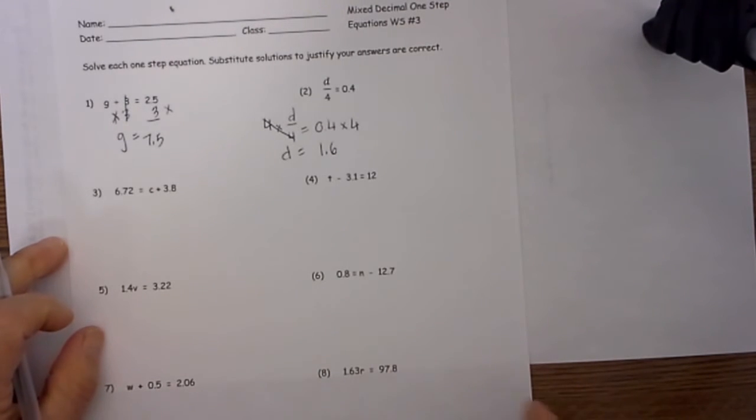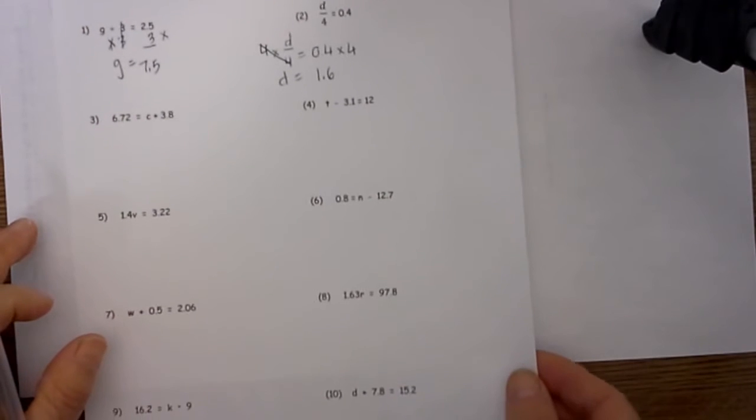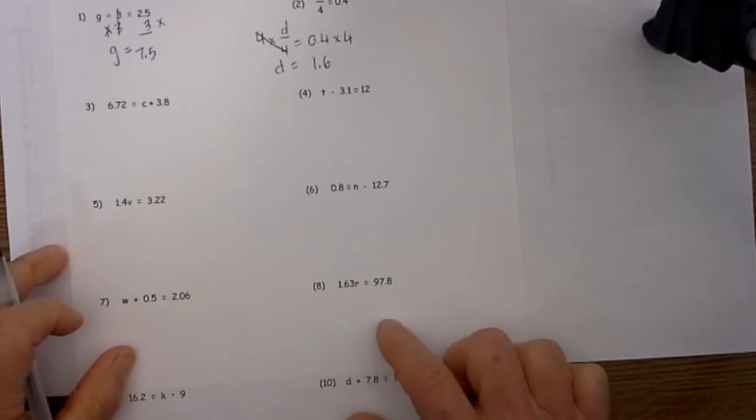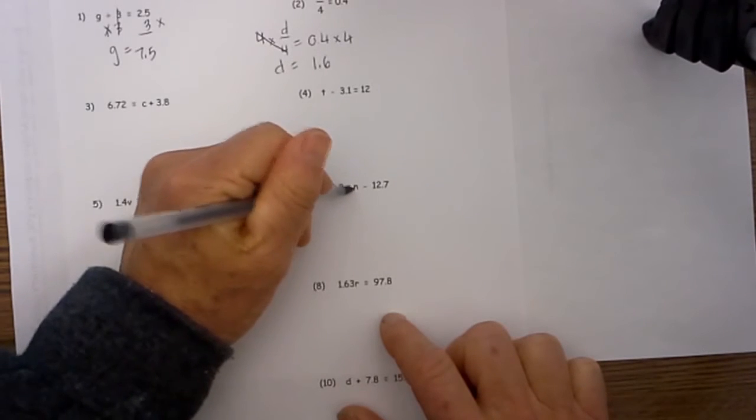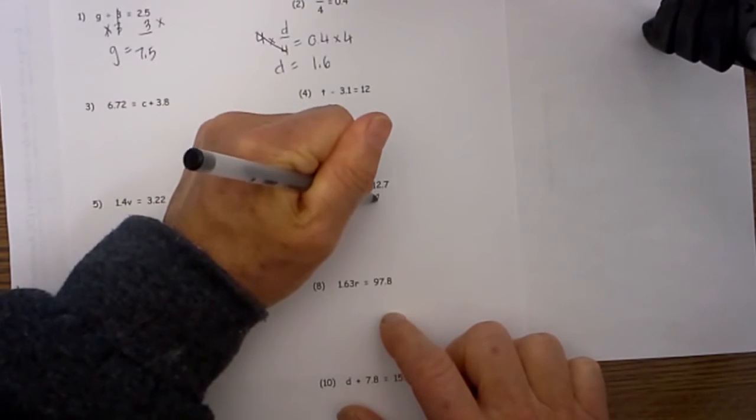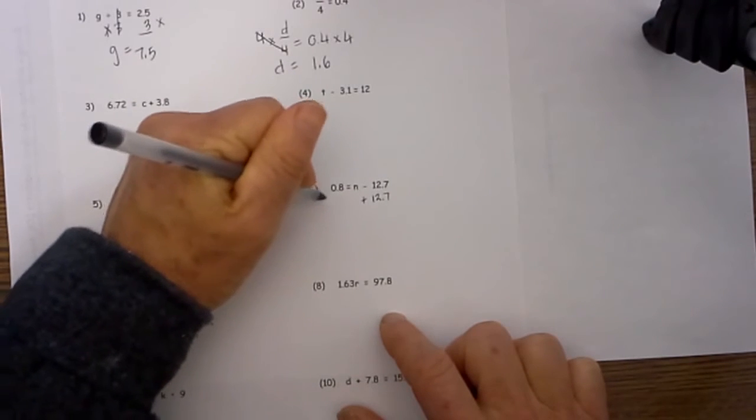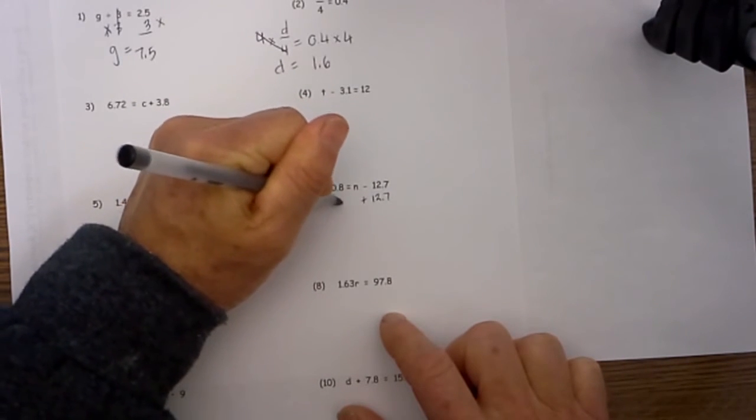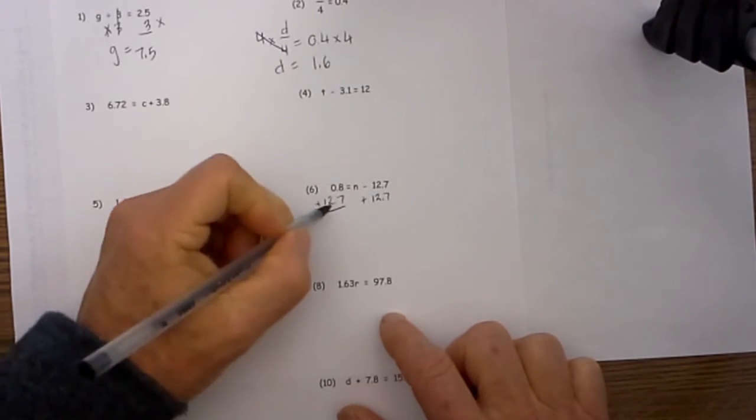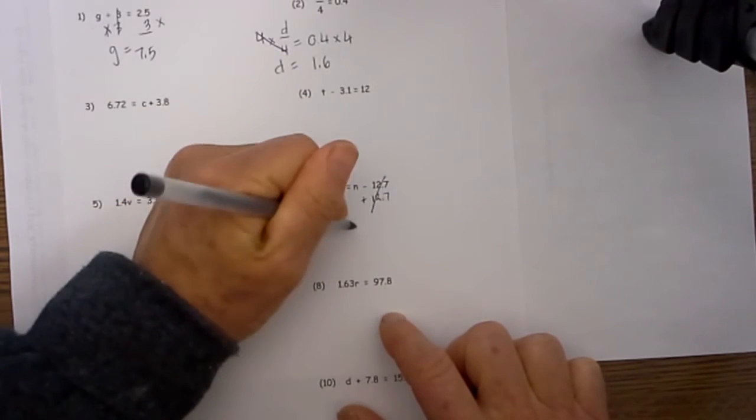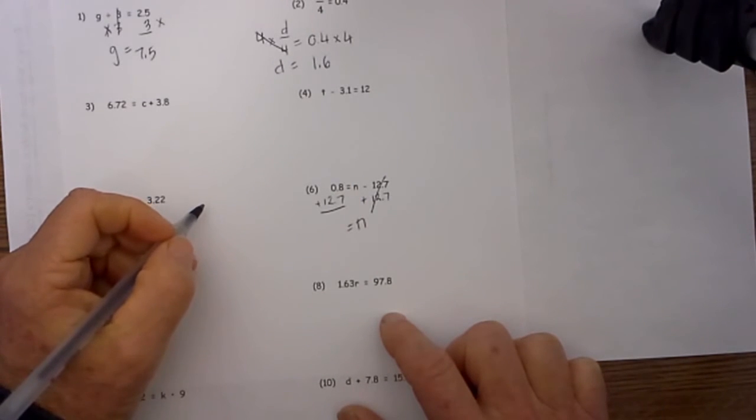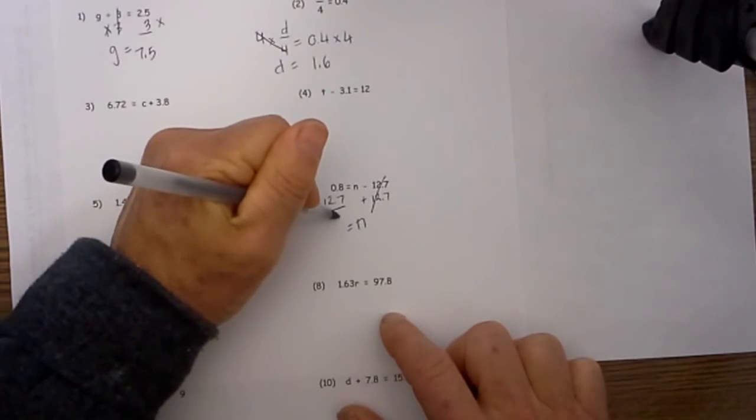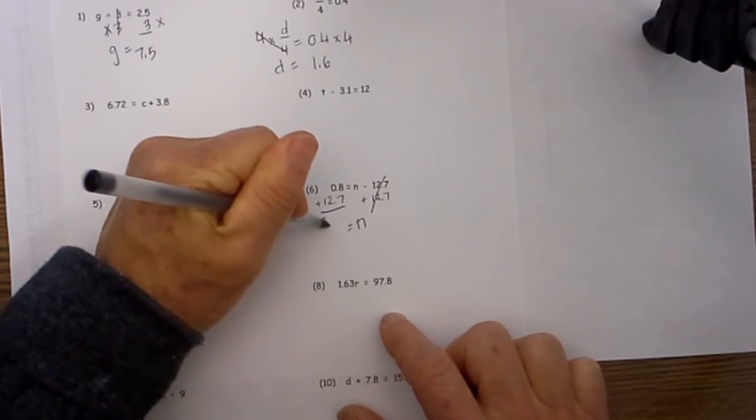Next let's move down to number 6, and number 6 is 0.8 equals n minus 27. Well we have a subtraction here. So in order to get the variable by itself we will use addition. So we have 12.7 and then we will add 12.7 to the other side. 12.7 plus 0.8 is equal to 13.5.